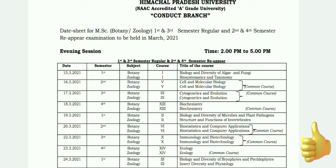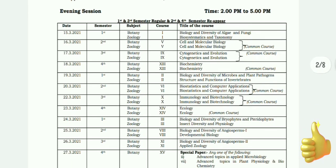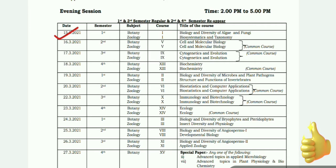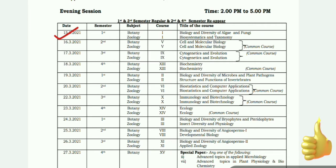So talking about the first semester, the first exam is Biology and Diversity of Algae and Fungi, which is Botany 15, and Zoology is Biosystematics and Taxonomy. The first semester exam is on the 19th.